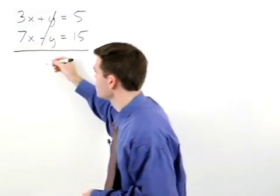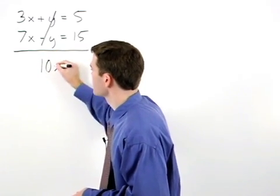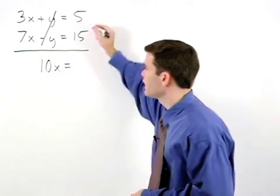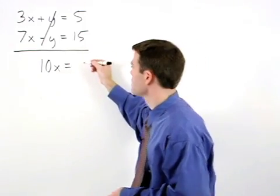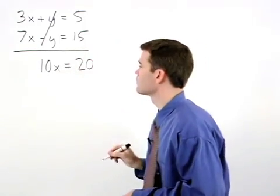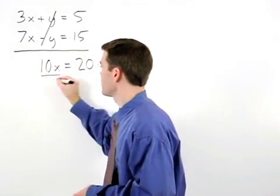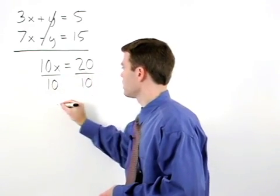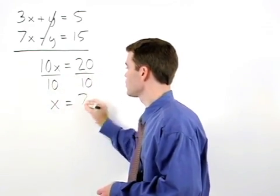On the left, 3x plus 7x is 10x, and on the right, 5 plus 15 is 20. Dividing both sides by 10, x equals 2.